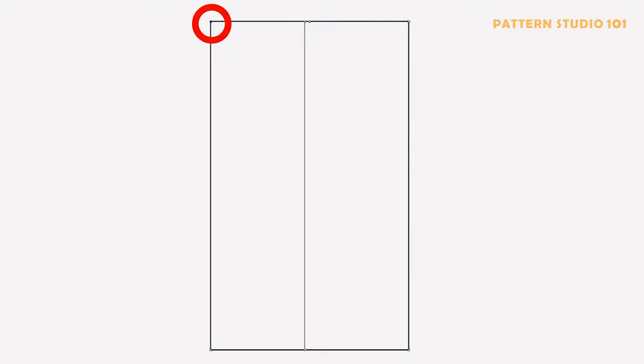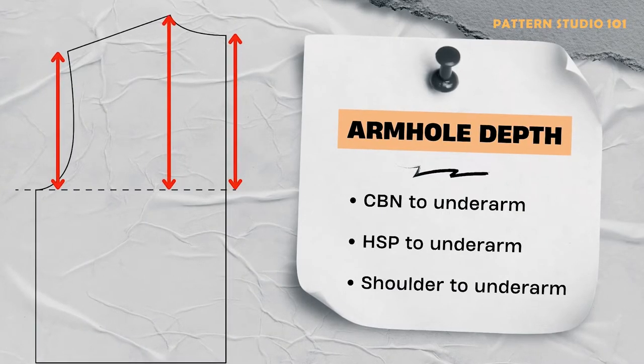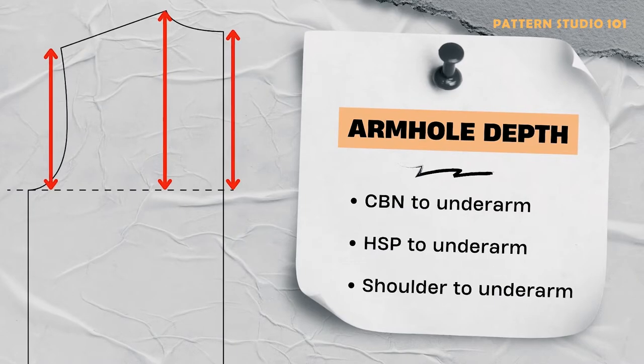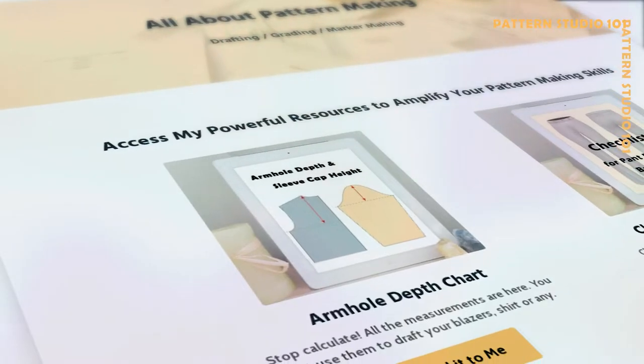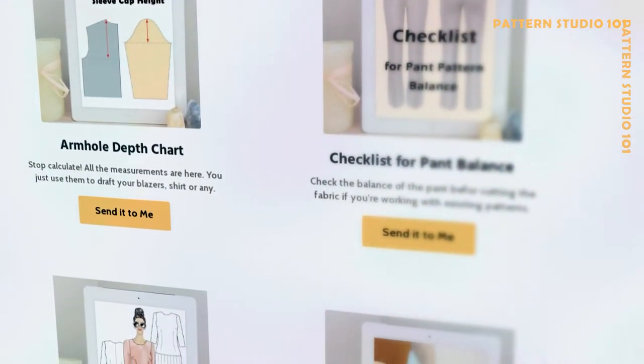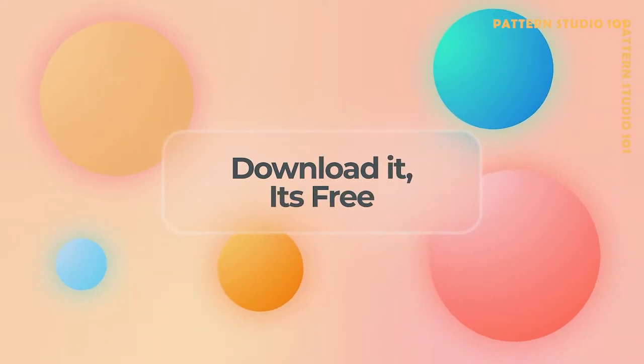From the center back neck point, measure down the armhole depth. Armhole depth can be measured from the center back neck or sometimes from the high shoulder point. If you have no idea how to determine the armhole depth, I have an armhole depth chart for all types of designs on my website. Go to patternstudio101.com and download it.